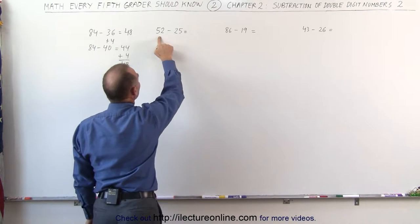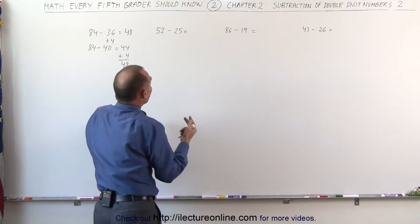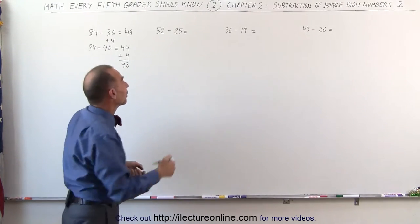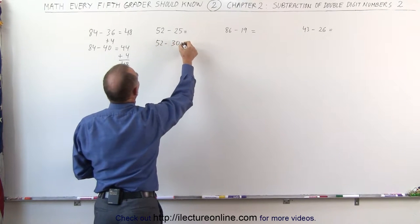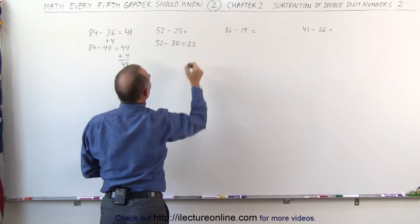Here, I'm subtracting 25 from 52. I realize that 5 is bigger than 2, which makes it difficult to do. What I'm going to do is subtract 5 more than I should. So I get 52 minus 30, and when I do that, 50 minus 30 is 20, that gives me 22.